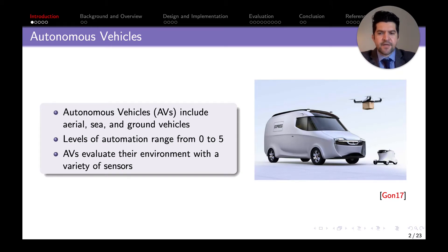Autonomous vehicles include aerial, sea, and ground vehicles. Most people usually associate them with ground vehicles, but there's a wide range of vehicles. The automation range is from 0 to 5, with 0 being absolutely no automation and 5 needing no human interaction.